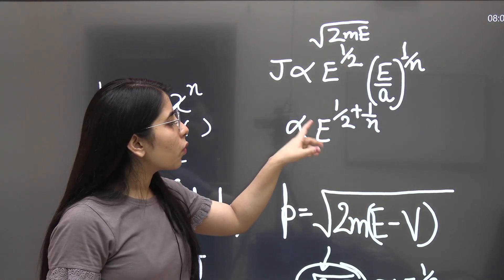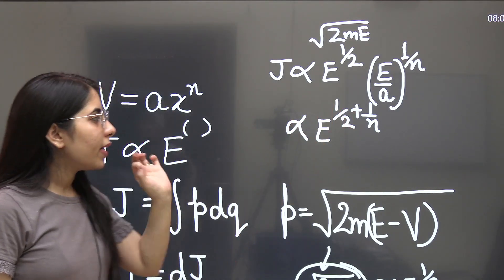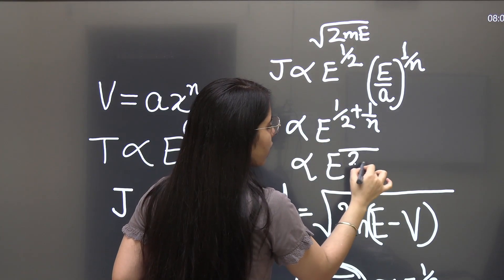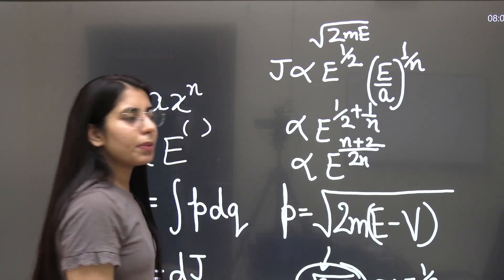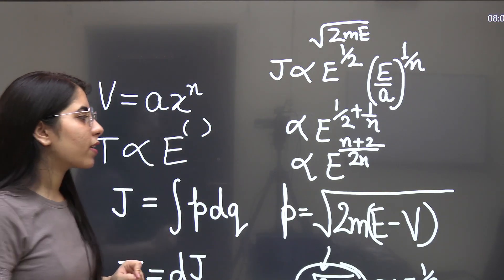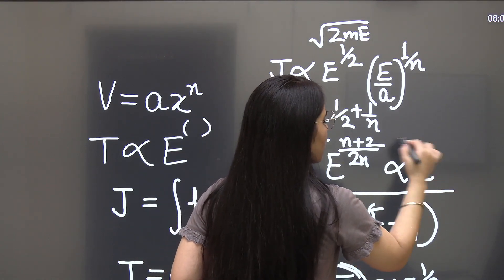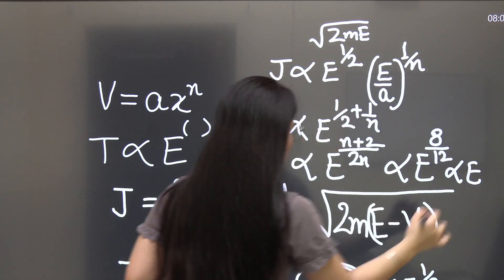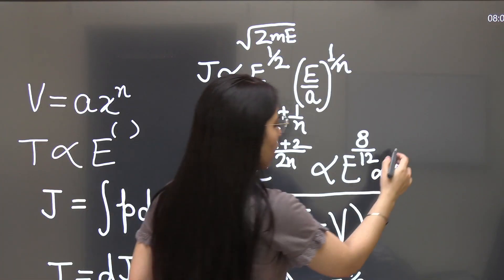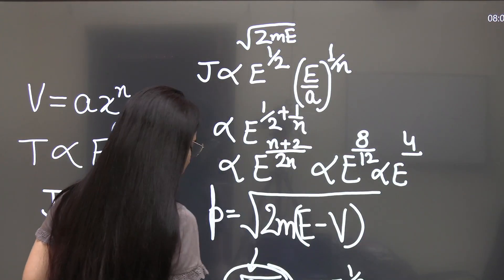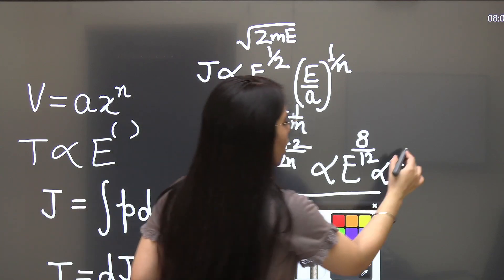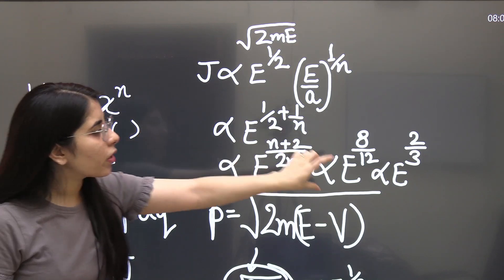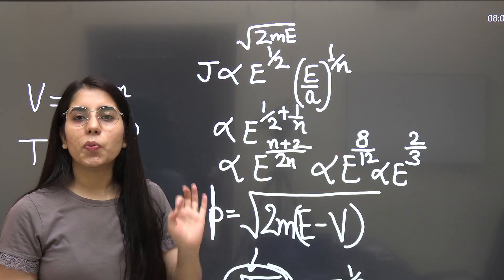So it's going to be E to the power 1 by n. In this case, if I am taking n equal to 6, or want to simplify it a little more, I can write n plus 2 upon 2n here. And if I will be taking 6 at place of n, I will be getting E to the power 6 plus 2, which is 8, over 2 into 6, which is 12. That gives E to the power 8 upon 12 — dividing both terms by 4 — you will be getting 2 upon 3. So this is how J is dependent on E: J is proportional to E to the power 2 by 3.